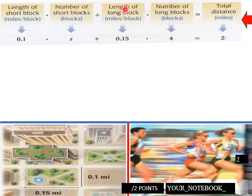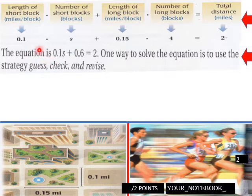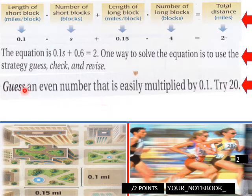What we have: length of the short block is 0.1 miles times the number of short blocks would be s, plus length of long block which would be 0.15 miles times the number of long blocks which was 4, equals a total distance of 2 miles. So the equation up here is 0.1s plus 0.6 equals 2. 0.1s, then 4 times 0.15 is 0.6 equals 2.